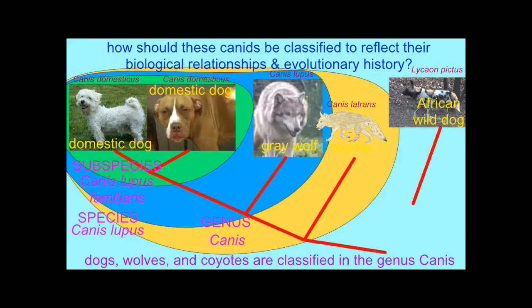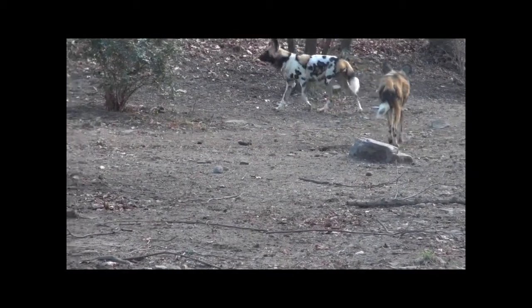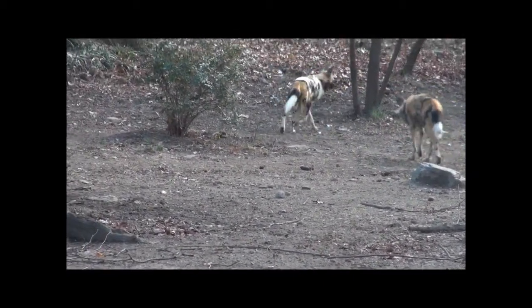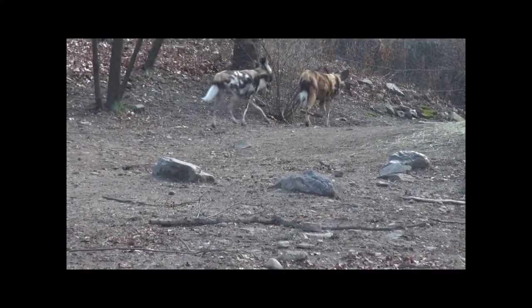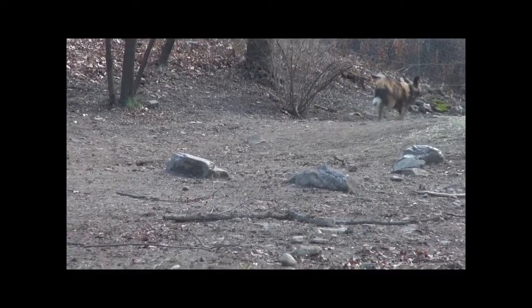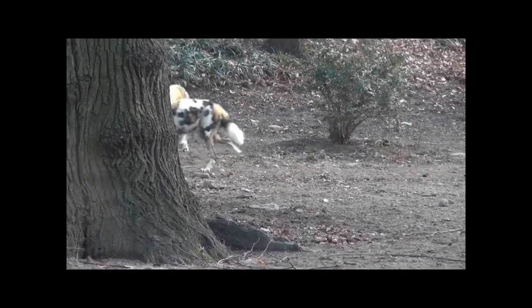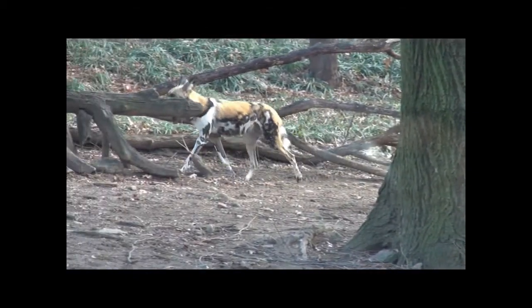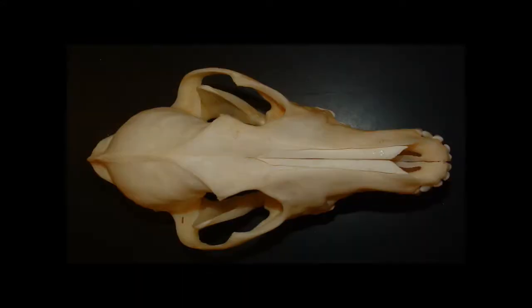While the African wild dog is closely related to the genus Canis — and by some taxonomists actually classified within it — there are no known hybridizations between African wild dogs and wolves, coyotes, dogs, or jackals. The reason is unknown and would be different biologically in each case. Apparently the genetic differences are sufficient to prevent successful hybridization, even though they share the same chromosome count of 78.